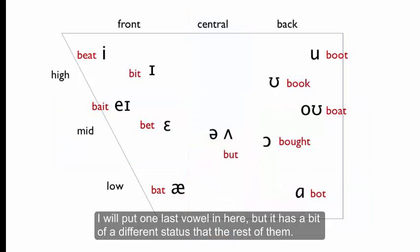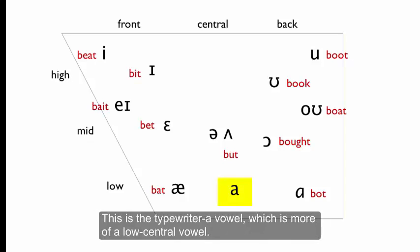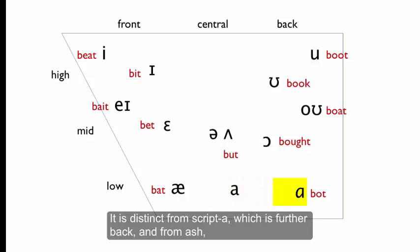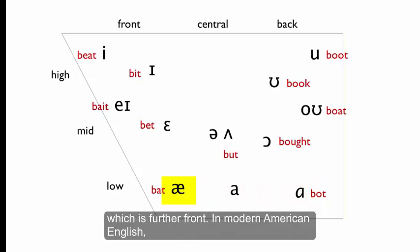I'll put one last vowel in here, but it has a bit of a different status than the rest of them. This is the typewriter A vowel, which is more of a low-central vowel. It's distinct from script A, which is further back, and from ash, which is further front.